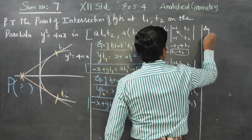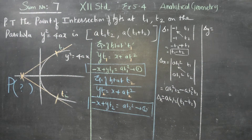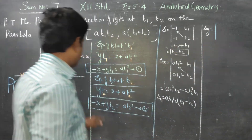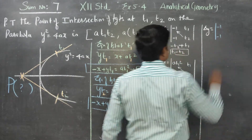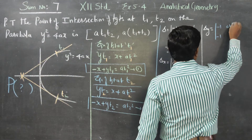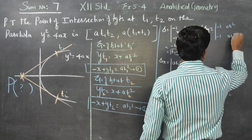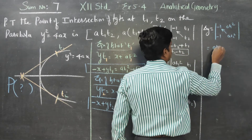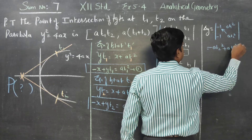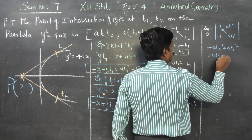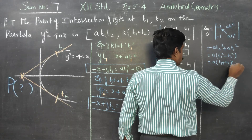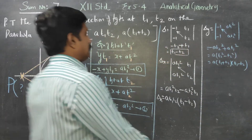For delta y, we use the x-coefficients -1 and -1 with right-hand side values aT1² and aT2². Computing right-hand side minus left-hand side: aT2² - (minus)(minus) + aT1² gives a(T1² - T2²). Using the identity a² - b² = (a+b)(a-b), delta y = a(T1+T2)(T1-T2).